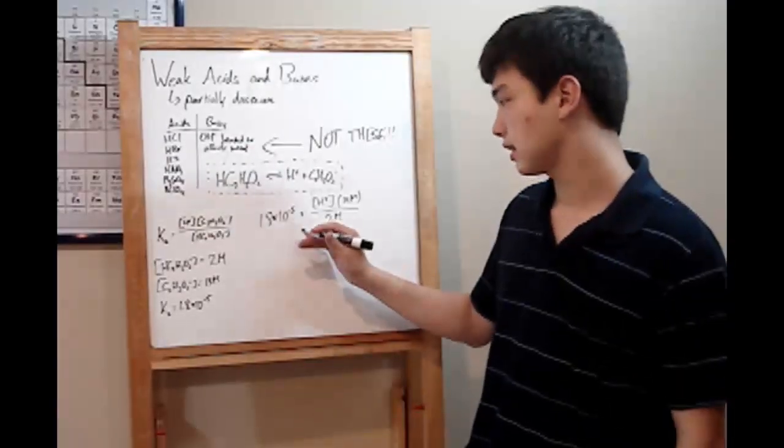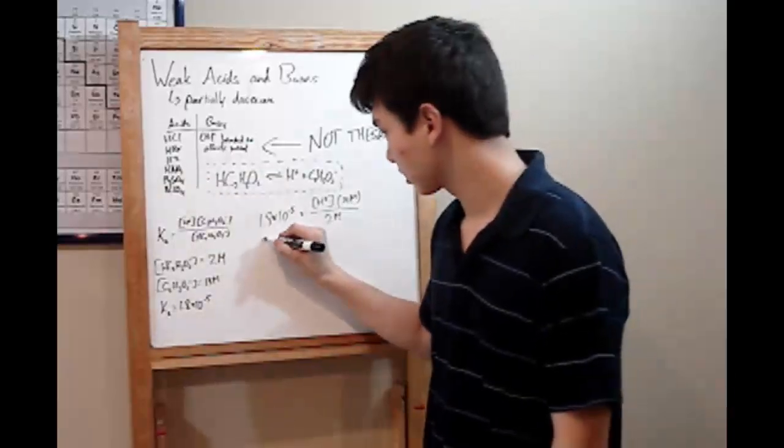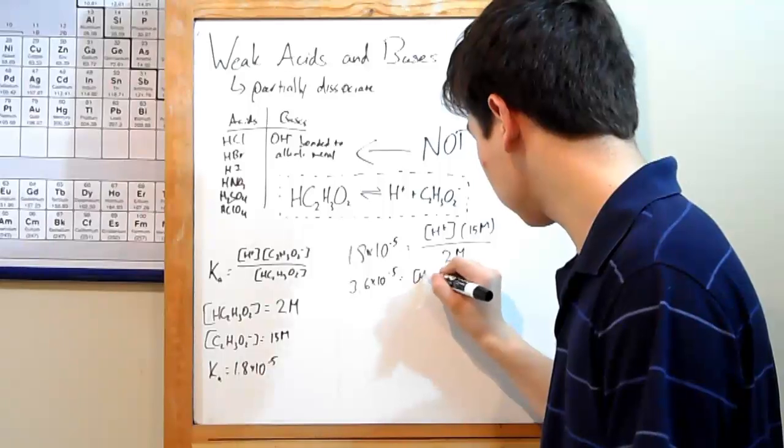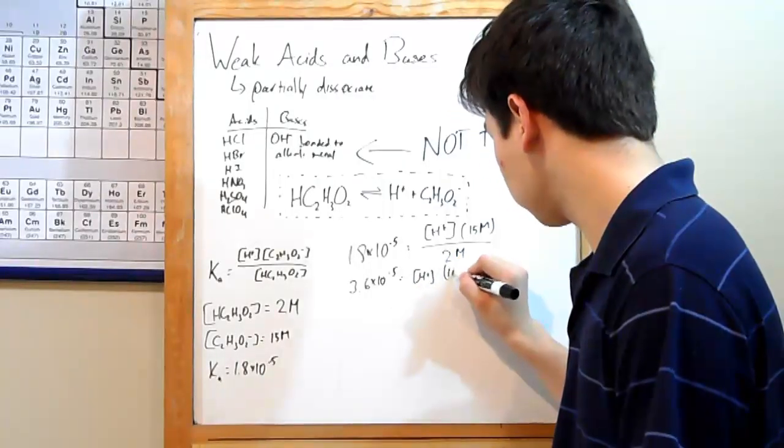Simplify. 1.8 times 10 to the negative fifth times 2. 3.6 times 10 to the negative fifth equals your H plus ions times 15 molar.